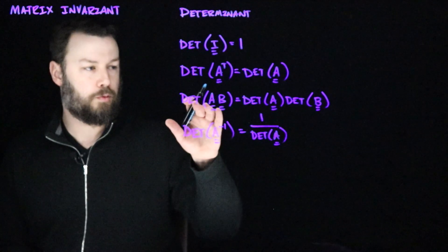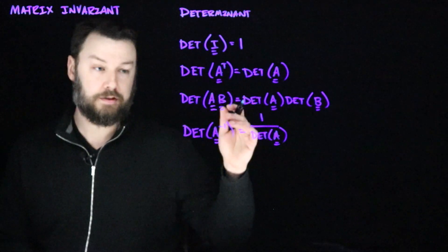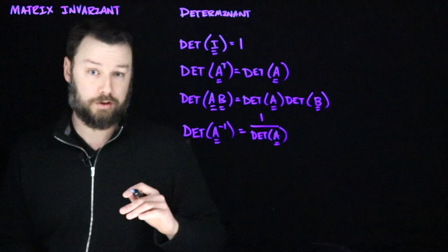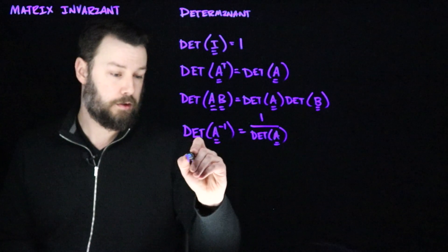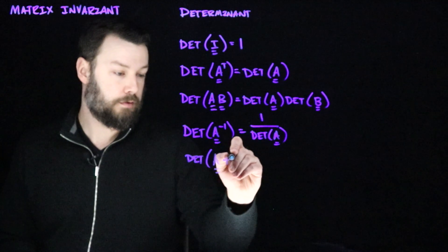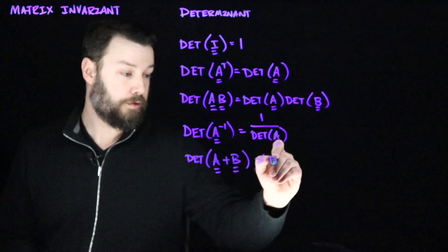Note also that whereas product behaves nicely with determinant and doesn't with trace, in general the determinant of the sum of two matrices is not going to be the sum of the determinants. So, det A plus B is not, in general, equal to the sum of the determinants.